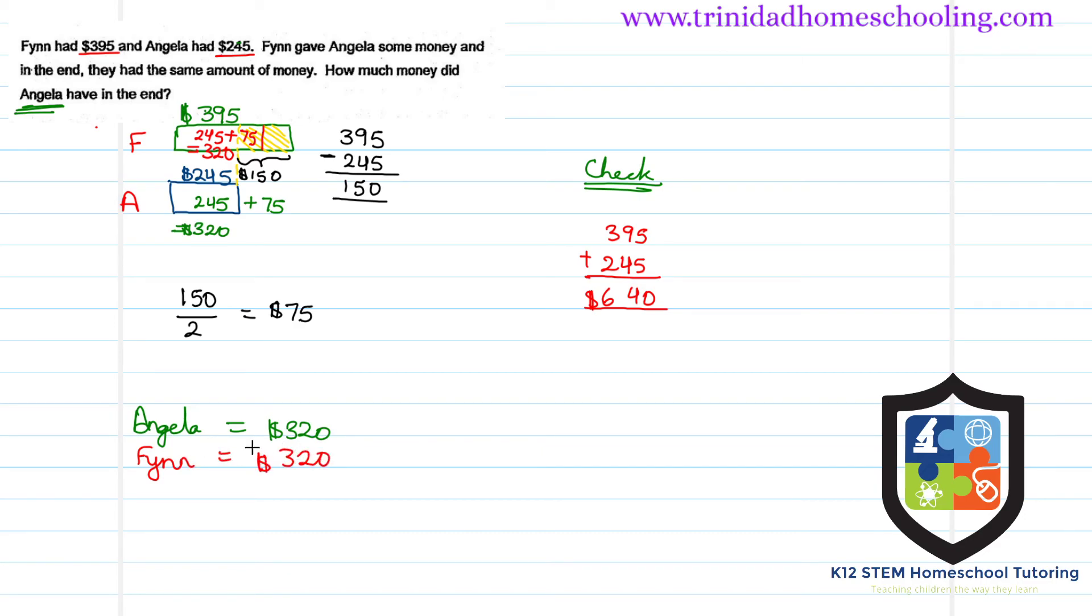Let's add them and make sure we get back $640. 2 plus 2 is 4, 3 plus 3 is 6. Okay, so we did this quick check at the end to make sure that we were on the right path and we didn't make any arithmetic mistakes in our calculations. So our answer to the question is: how much did Angela have in the end? $320.